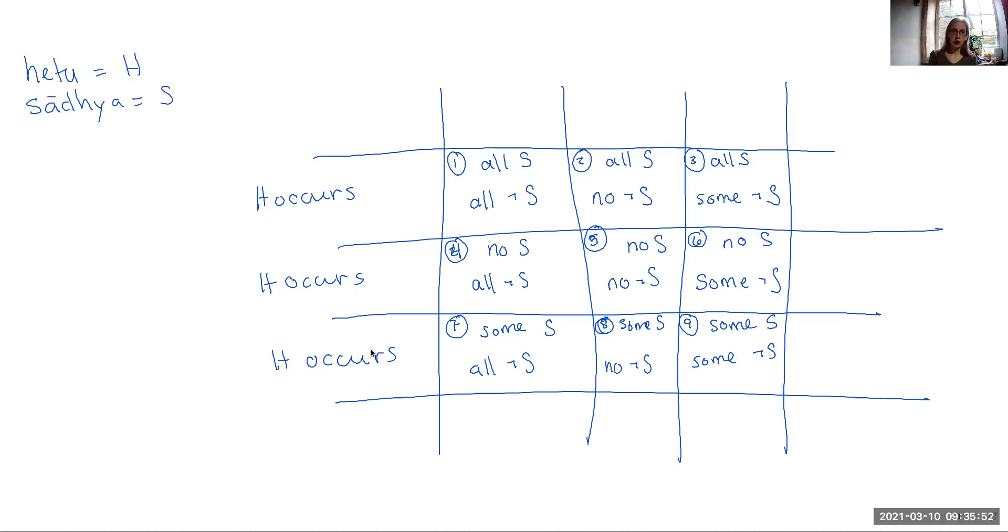So given a target property S, your H, your Hetu, your ground property will fall into one of these categories. Now, many of these categories are not going to be acceptable for demonstrating the right kind of connection between the Hetu and the target property. You won't be able to use them to establish the presence of the target property in the subject. For instance, suppose that you have a Hetu that doesn't actually occur in anything that has the target property. So none, H occurs in no S. Well, then H can't be used to establish the presence of S. In fact, you might think you could use it to establish the absence of S. So any type of reason that occurs in any one of these is going to be a bad reason. It's going to be fallacious.